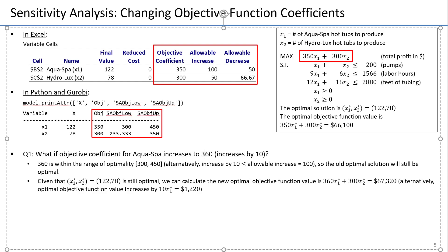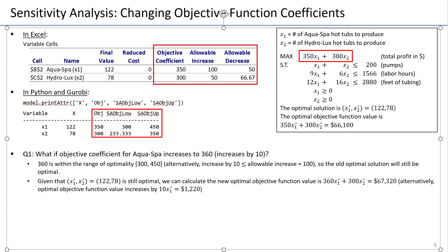Notice that if I were to increase this by 20, 30, or up to 100, the same logic applies — the optimal solution doesn't change, and we can conclude the new optimal profit. What's important is that if someone on the production floor is producing 122 AquaSpas and 78 HydroLuxes every week, even if the profit coefficient is different, they are still doing the best thing possible and maximizing profit. Now it's actually a higher profit in this case.